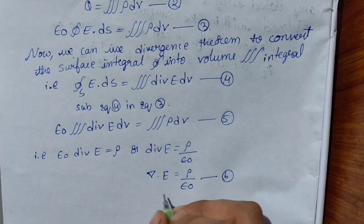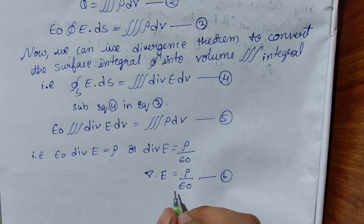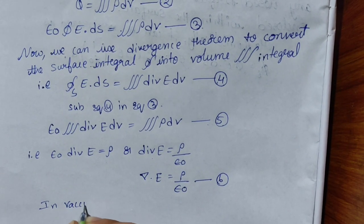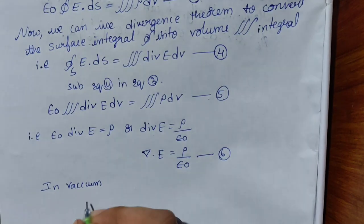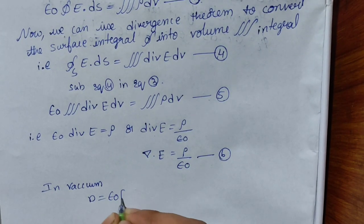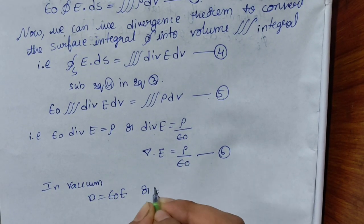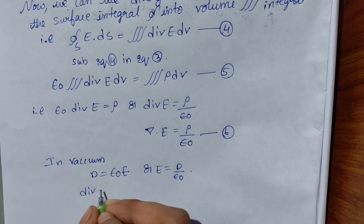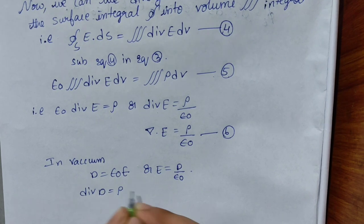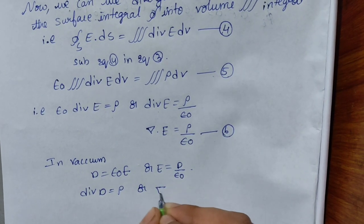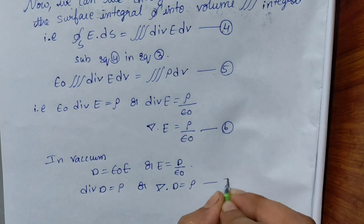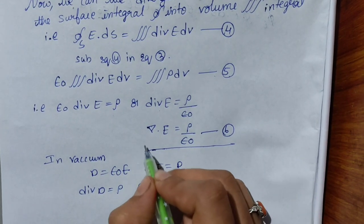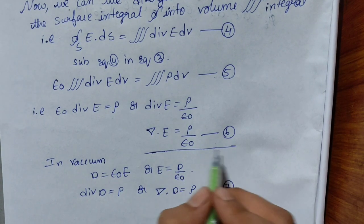Therefore ∇ · E = ρ / ε₀ — this is equation 6, and this is Gauss's Law in differential form. We can also write it as ∇ · D = ρ, since D = ε₀ · E. This seventh equation ∇ · D = ρ is the differential form of Gauss's Law.